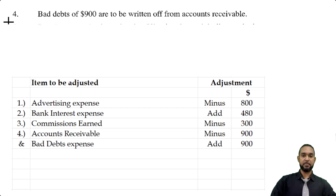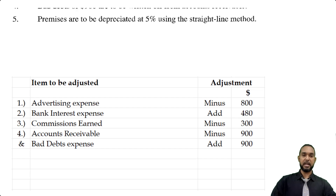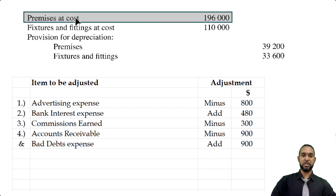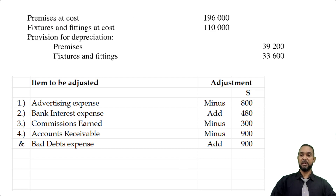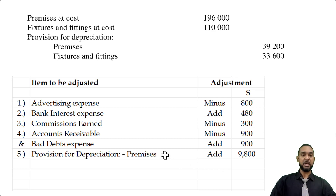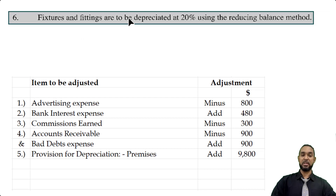Item five says premises are to be depreciated at 5% using the straight line method. Let's go up to the trial balance — premises at cost is $196,000. Under the straight line method, we simply calculate the depreciation expense by multiplying the rate by the cost. So we're going to find 5% of $196,000 and add it to the provision for depreciation of premises. 5% of $196,000 turns out to be $9,800.